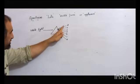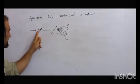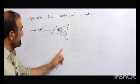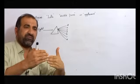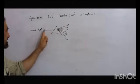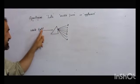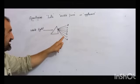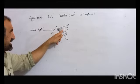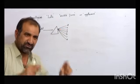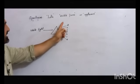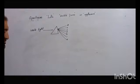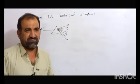The color band obtained when white light is passed through a prism is called a spectrum. The arrangement of radiation in increasing or decreasing order of wavelength and frequency is called spectrum.